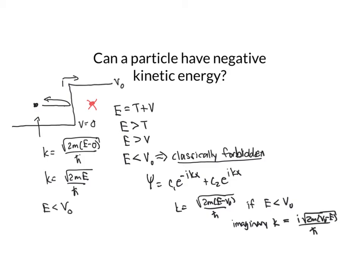And then when I plug k into my solution up here, the imaginary number i times this i equals -1. So i² equals -1.